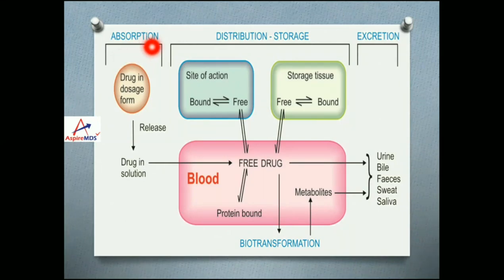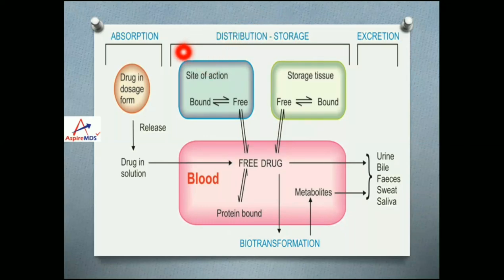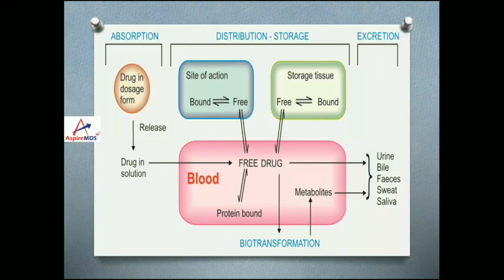When the drug is absorbed in its original form, it is released from its tablet or whatever form it is in, in the form of a solution. This solution gets distributed to the site of action and to places where it gets stored. In both places, it can be in a bound form or a free form. The free form from both the site of action and storage will go to blood, where the free drug can have different fates — it can get bound to plasma protein or remain free. The free drug gets biotransformed; for example, if in prodrug form it gets activated, or the drug can get metabolized and excreted in the form of urine, bile, feces, sweat and saliva.